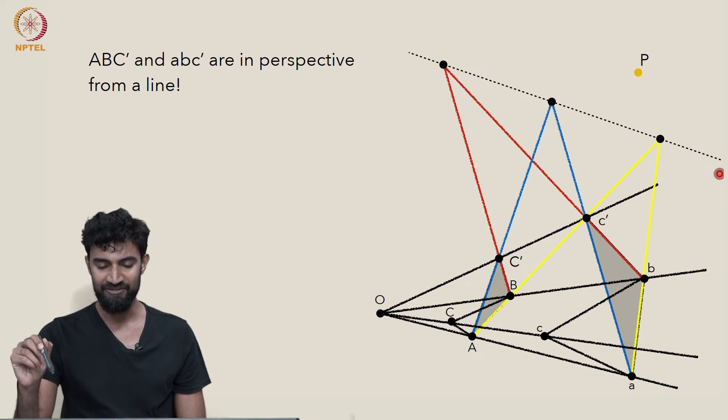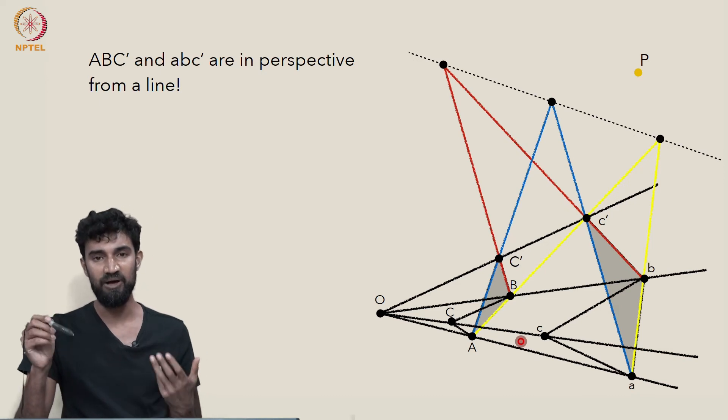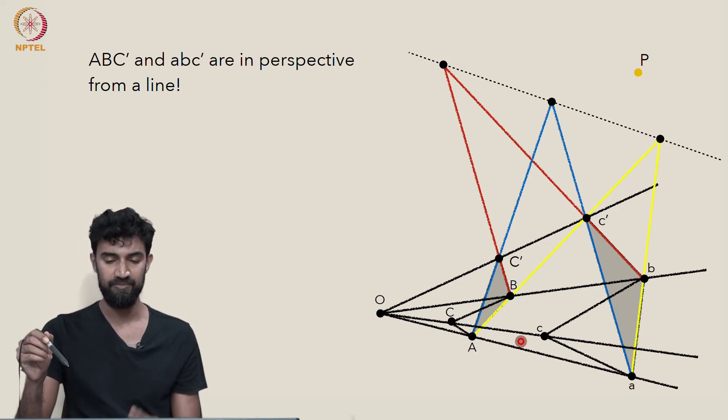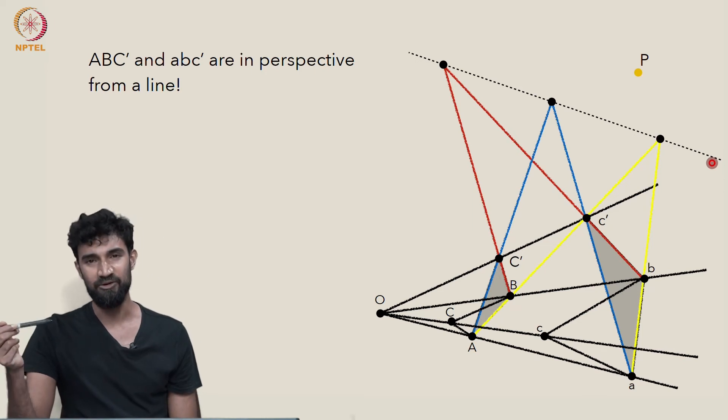Now we haven't finished our proof yet. We want to show that these original two triangles are in perspective from a line on the ground plane. This axis here is probably not on the ground plane,